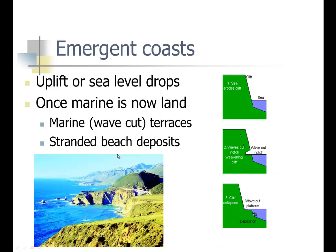Emergent coasts are anywhere the land actually rises or sea level falls. This flat area up here was where the water was — it's called a wave cut terrace. Once marine, now land, you get these wave cut terraces and stranded beach deposits. The water cuts out this flat area, then as the water drops it makes another wave cut, and you can see it keeps cutting into the coastline, moving farther and farther in.